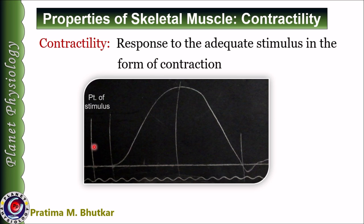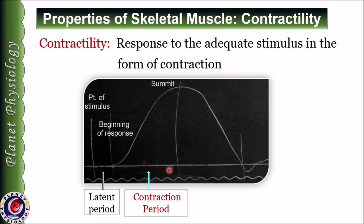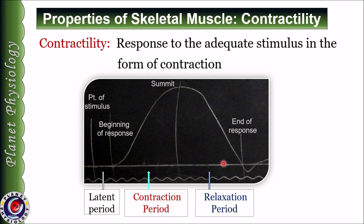Let us understand the components of the simple muscle curve. The first line indicates the time at which the stimulus is provided to the nerve — this is the point of stimulation. After a certain time interval, the muscle begins to respond. The time interval between the point of stimulus and beginning of the response is called the latent period. Once the muscle begins to show response, it gradually increases and attends a peak. The duration from beginning of response to the summit is the contraction period. After the peak, the muscle begins to relax, and this entire duration from the summit till the end of response is called the relaxation period.